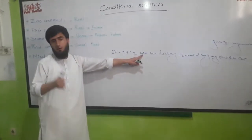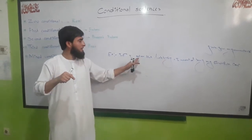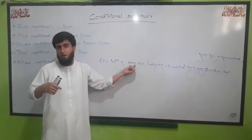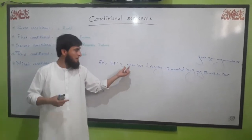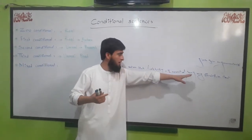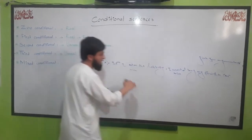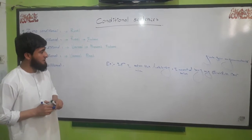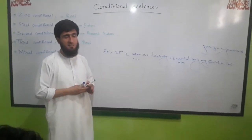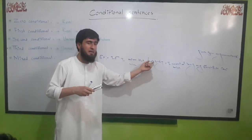For example: 'If I won the lottery, I would buy my favourite car.' In this example, I am not talking about the past — I am talking about the present or future. I do not have a lottery ticket right now; I am only dreaming. It is an imaginary situation. I use the second form of the verb 'win' because I do not have the lottery, meaning I am only dreaming about the future. If I change 'won' to 'win' and 'would' to 'will,' I get the first conditional. The difference: in the first conditional, I actually have the lottery ticket in my pocket and there is a real possibility I could win.